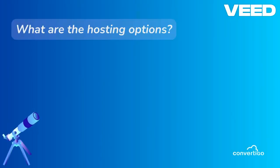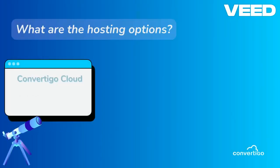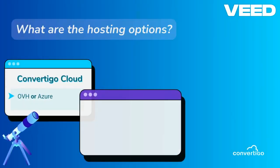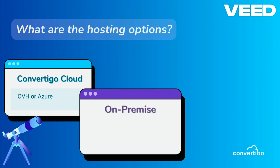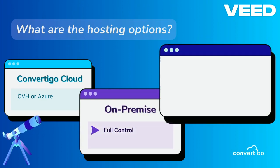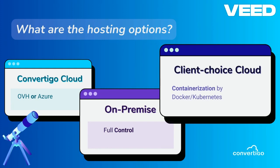For hosting, you have three options: the Convertigo Cloud on OVH or Azure, on-premise, or a cloud chosen by the client with containerization methods.